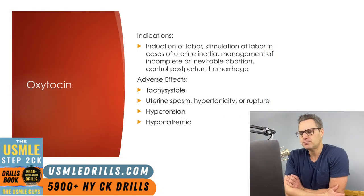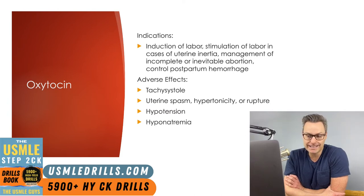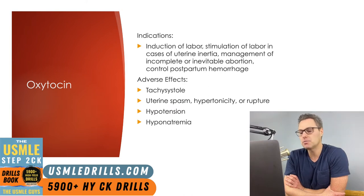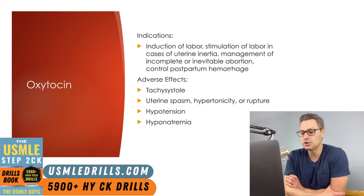Oxytocin functions to increase contractile activity on uterine smooth muscle. Other indications include induction of labor when continuing pregnancy carries higher risk than inducing. Oxytocin can also be used as an adjunct in treatment of incomplete or inevitable abortion, as well as postpartum hemorrhage, where it helps reduce bleeding.